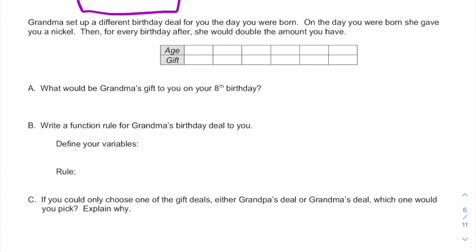Now it's grandma's turn. Grandma's going to give you a nickel on the day you're born, and then every year she's going to double that. So you start off with a nickel, and then we're doubling it. So after one year you have ten cents, and then twenty cents, then forty, then eighty, then one sixty, or a dollar sixty.